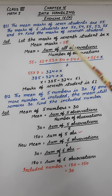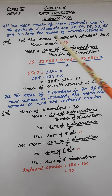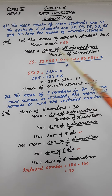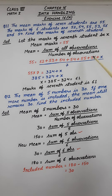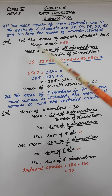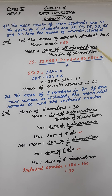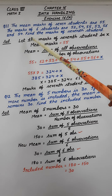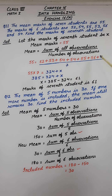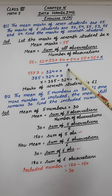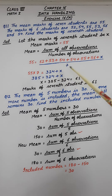Now mean marks — it is given here as 55. The formula for mean is sum of all observations upon number of observations. Mean of these observations is given as 55. So sum of all observations means we will add all these observations — 6 are given and 1 we are assuming as x, upon total observations which are 7.